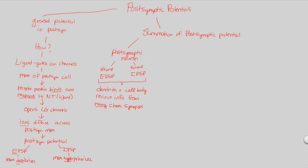There may be a summation of excitatory or inhibitory signals depending on the type of information received. For example, 10 excitatory synapses may sum to an excitatory potential, but 11 inhibitory synapses summing to an inhibitory potential would result in an overall inhibitory outcome. The dendrites and cell body receive a large amount of information from many different synapses, and whether the sum is excitatory or inhibitory depends on how much they receive and from which chemical synapses. We'll elaborate on summation in the next video.